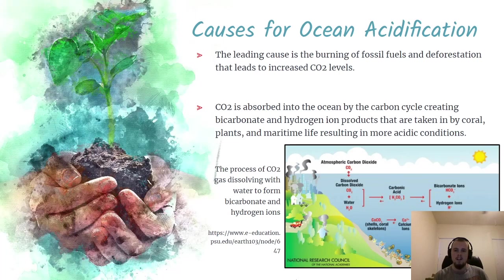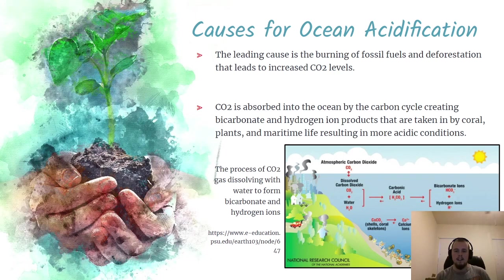So what is the cause for ocean acidification? The leading cause is the burning of fossil fuels and deforestation of our environments, which lead to increased CO2 levels in our atmosphere. Carbon dioxide is then trapped into our waters and mixed with water to create carbonic acid, which turns into bicarbonate ions and hydrogen ions that slowly raise the ocean's acid levels towards more acidic levels. As you can see here, this is the carbon cycle.